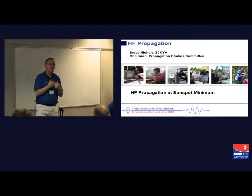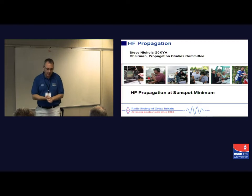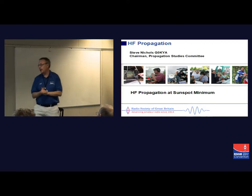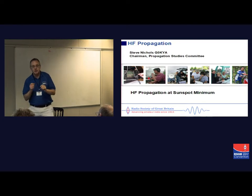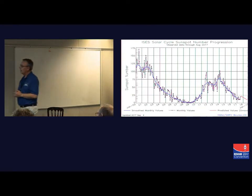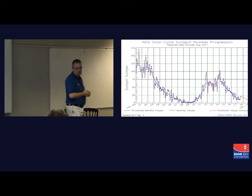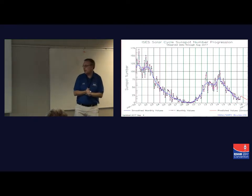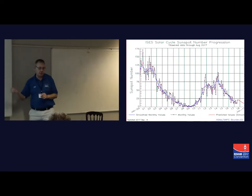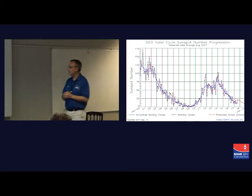Colin said that in the event of a very bad space weather event, the world could basically end — the banking system would collapse, there would be no food, no transport. But would 20 meters be open? That's what we need to know. So I'm going to look at where we are in the sunspot cycle, HF propagation through sunspot minimum, and some tools and hints and tips for what we can be doing over the next few years. Where are we in the current sunspot cycle? We are roughly here, and the indication is that sunspot minimum is 2019-2020. It's very hard to say exactly when — it's something you spot after the event. Someone said we are at sunspot minimum. No, we're not. We've got a lot more to go yet.